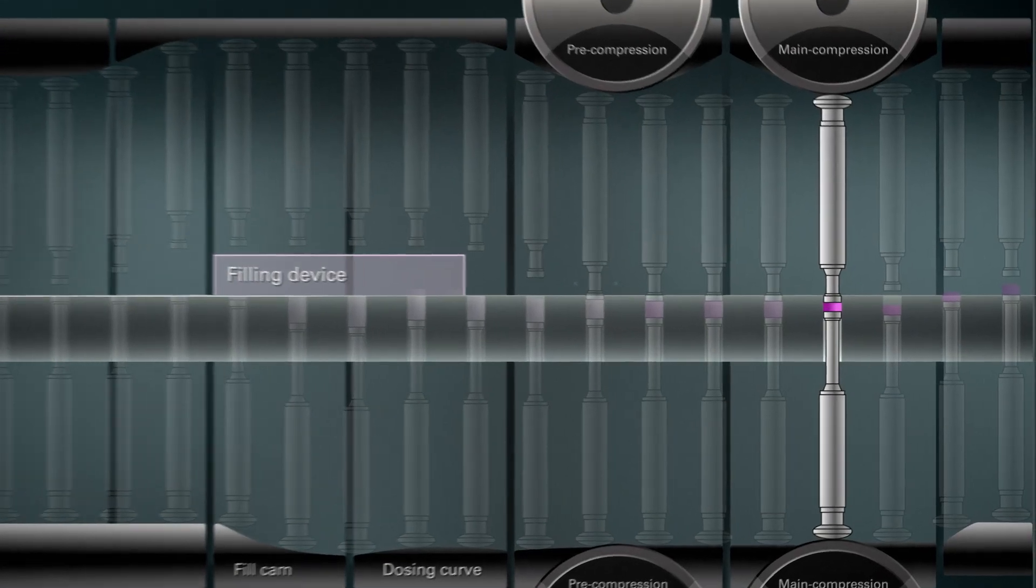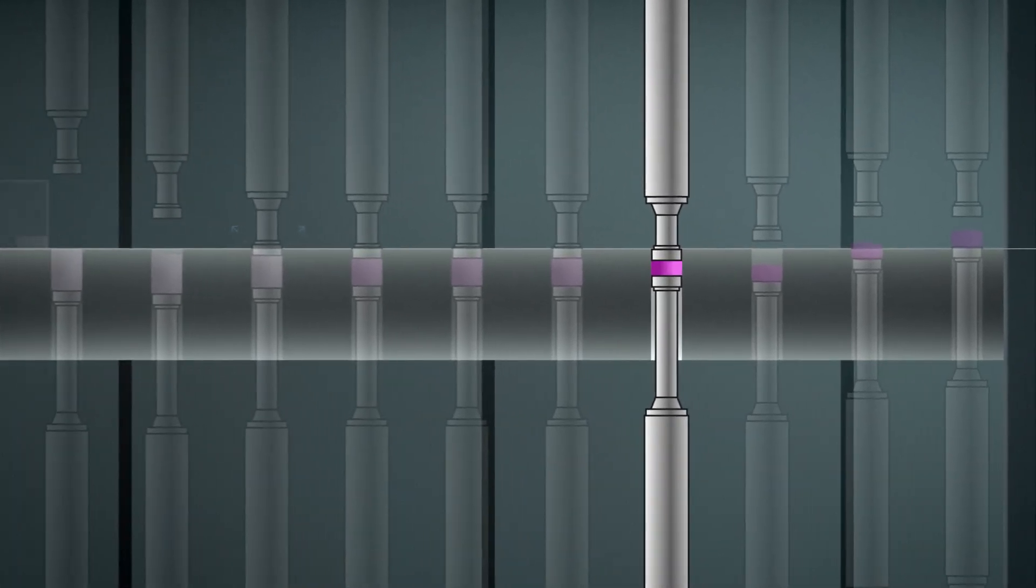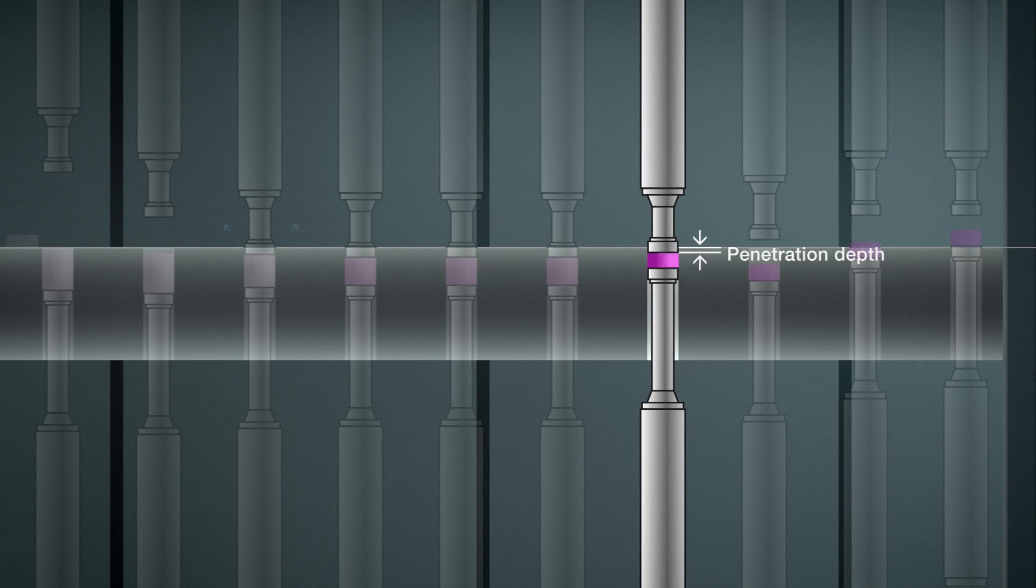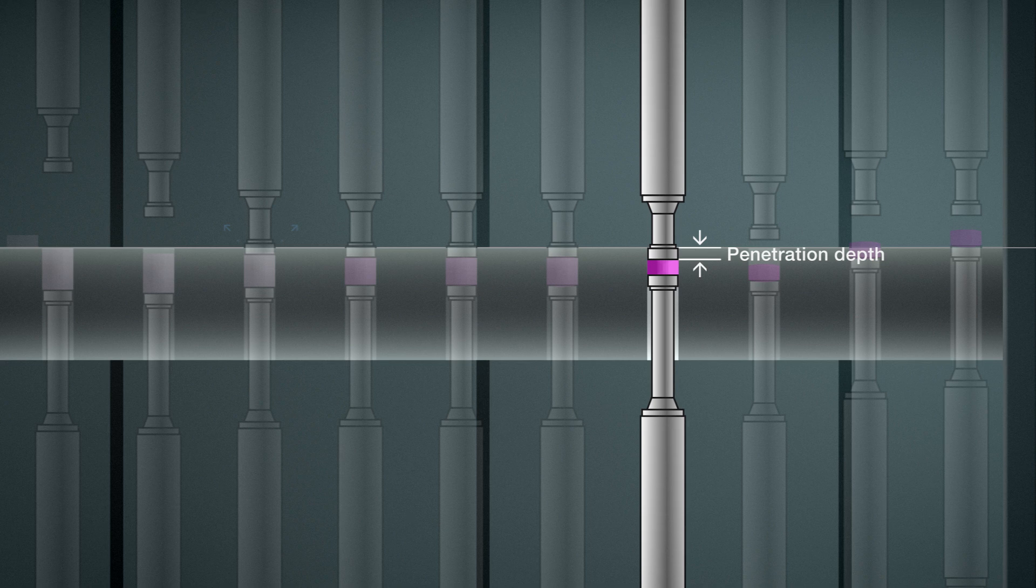At the main and pre-compression station, the upper pressure station determines the penetration depth. In combination with the lower pressure station, the web height of the tablet is defined.